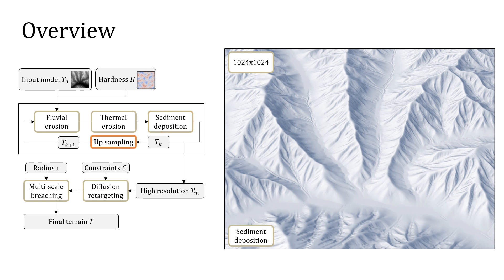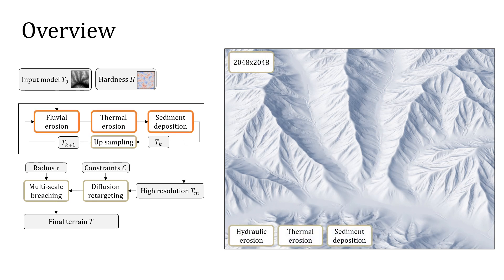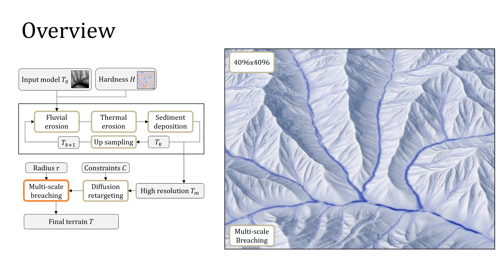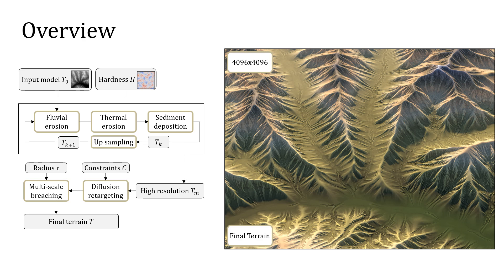We then increase the resolution of the terrain by a selected factor and repeat the amplification processes at a higher resolution. We eventually apply a diffusion-based retargeting process that preserves the original elevation of salient features such as peaks, crest lines, or saddles. We complete this post-processing step with a multi-scale breaching to obtain a hydrologically consistent terrain.